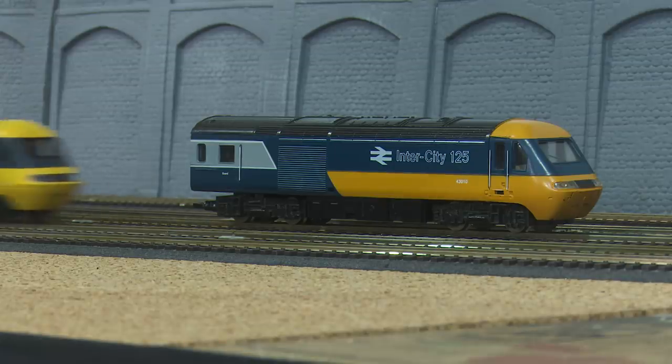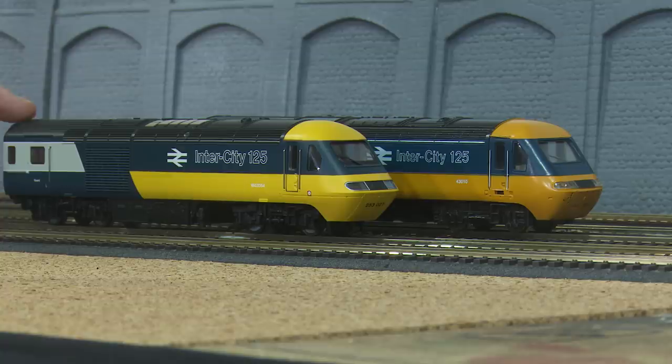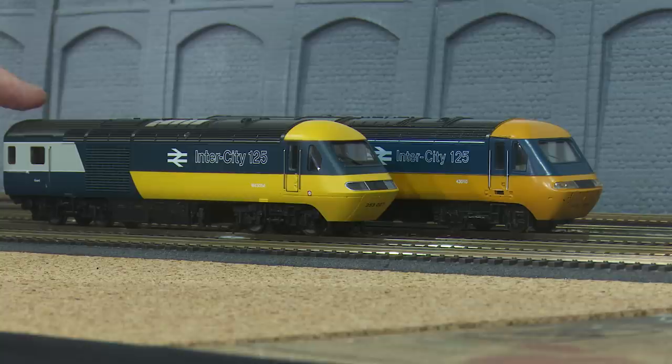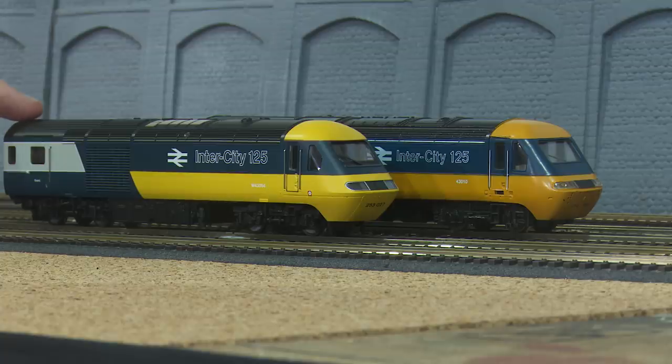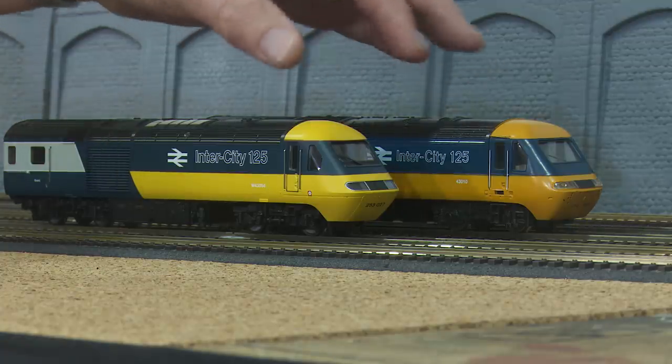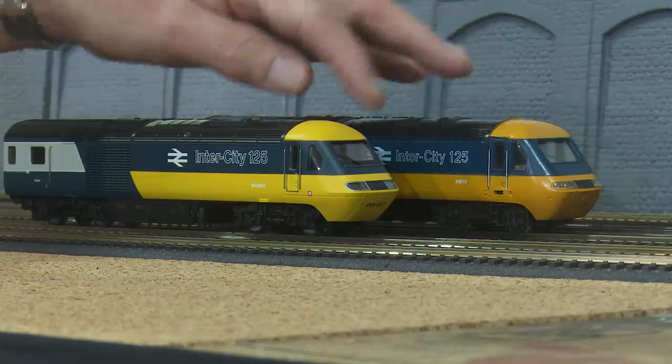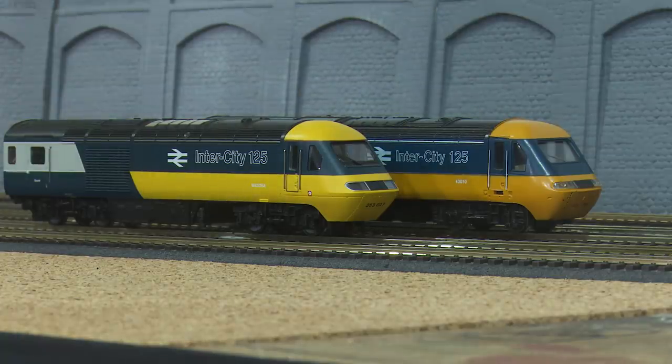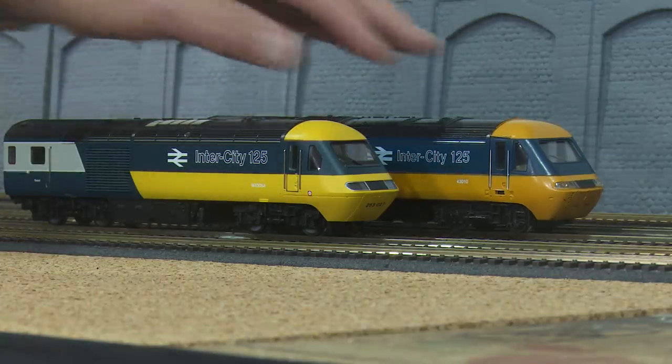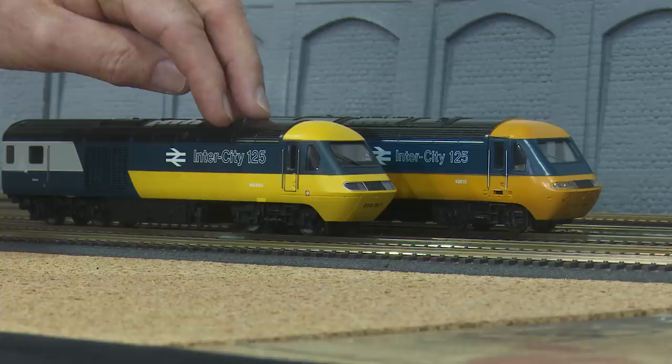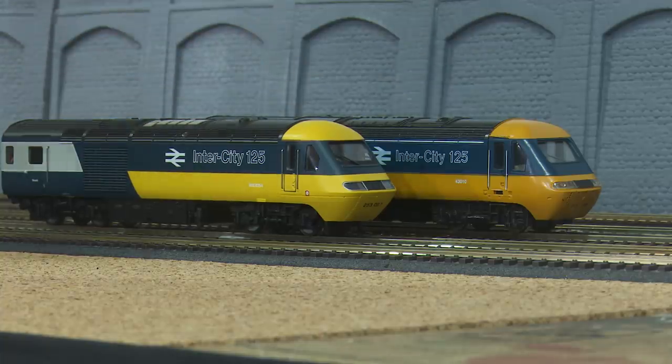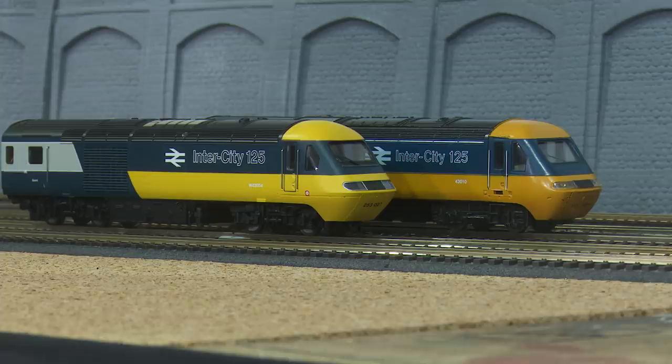Now obviously time's moved on and here's my version, which is an R2701. It's factory fitted with an eight pin decoder, so it's DCC ready. Produced between 2008 and 2010. Both are the original models from the 1970s because they don't have the exhaust baffle. Clearly there's nothing we can do cosmetically to bring this up to this standard. But let's have a little look at how it performs and see what we can do to the guts of the model.